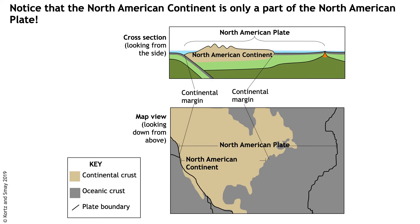We want to make sure you are thinking about plates and plate boundaries in three dimensions. The two major types of diagrams geologists use are cross-sections — looking at a slice into Earth from the side, like cutting a layer cake — and map views, looking down from above. We're going to practice making this connection between what landforms look like from cross-section and from map view.